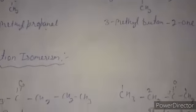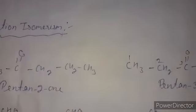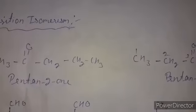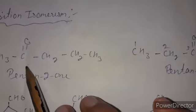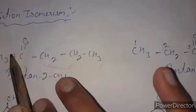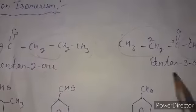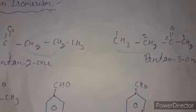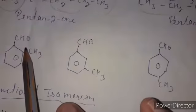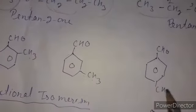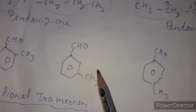Similarly, ketones show chain isomerism. The second type is position isomerism. Aldehydes use a terminal functional group, but ketones are non-terminal. For a five-carbon chain, we can have pentan-2-one and pentan-3-one. For aromatic compounds: ortho-, meta-, and para-methylbenzaldehyde.